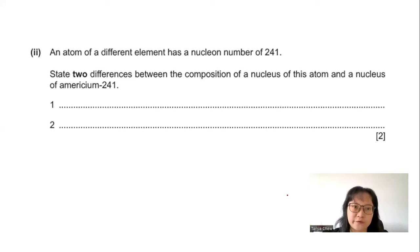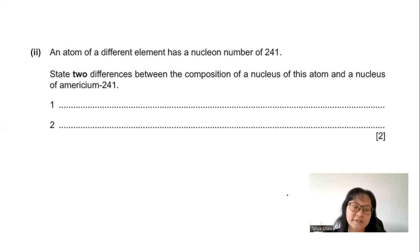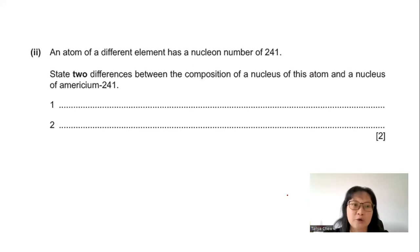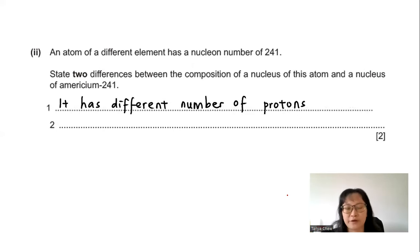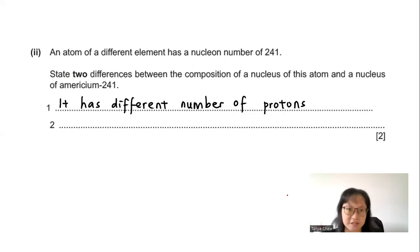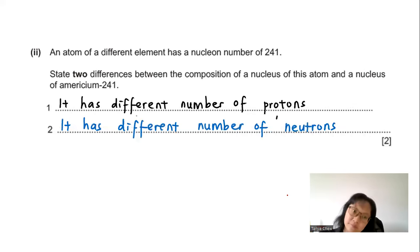Part A2: An atom of a different element has a nucleon number of 241. State two differences between the composition of its nucleus and that of americium-241. They have a different number of protons, because it is a different element, and they also have a different number of neutrons.